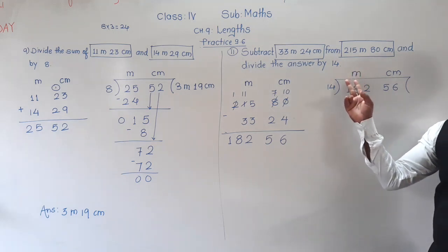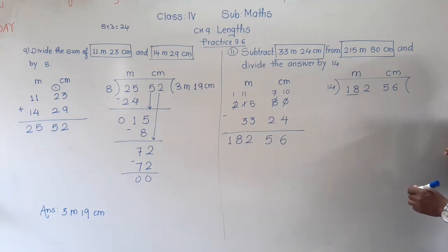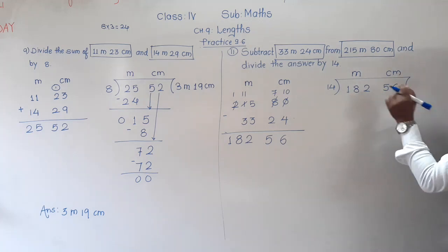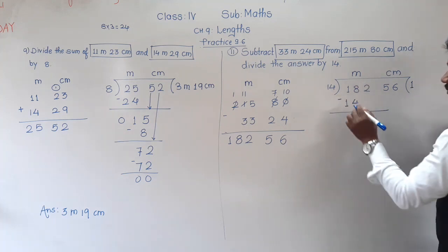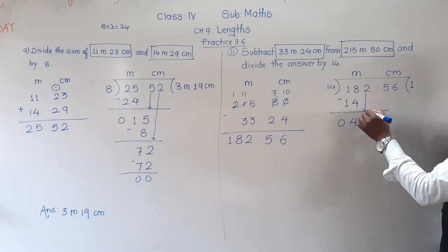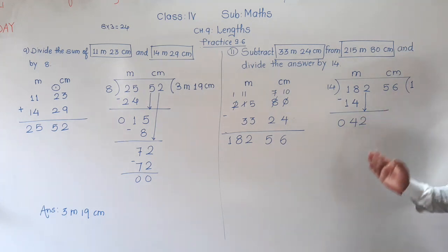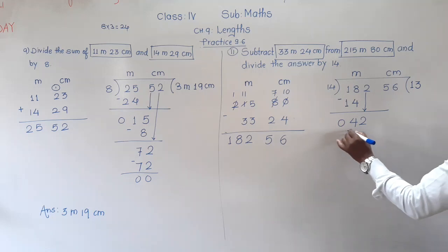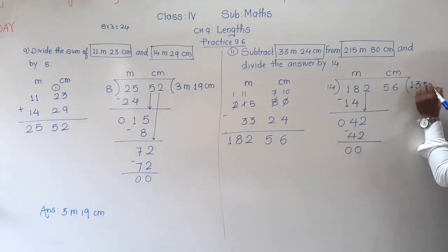Let us find the answer. The meter column has a 3-digit number. First divide the first 2 digits: 18. Is 18 in the table of 14? No. 14 ones are 14, 14 twos are 28 which is greater than 18, so the smaller number is 14 itself. 8 minus 4 is 4, 1 minus 1 is 0. Bring the next digit 2 down — it becomes 42. Is 42 in the table of 14? Yes — 14 threes are 42. 2 minus 2 is 0, 4 minus 4 is 0. Meter column is finished, so write 13 meter in the quotient.